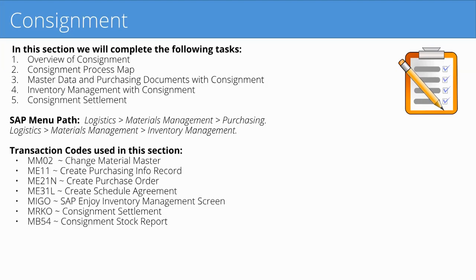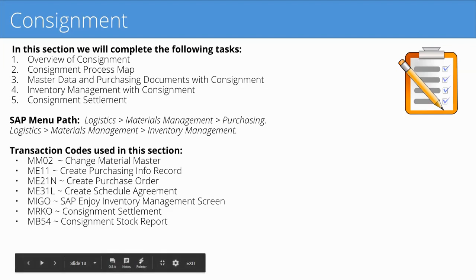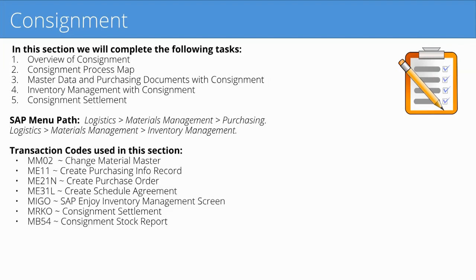We'll be changing the material master settings using MM02, creating a purchasing info record with ME11, and creating purchase orders with ME21N. You can also use schedule agreements — ME31L — as multiple types of purchasing documents are supported. For inventory postings we'll use MIGO, though you could use an inbound delivery for the goods receipt if you wanted. MRKO is the consignment settlement job that creates the invoicing and financial documents. MB54 is a consignment stock report, and MMBE and MB52 also show consignment and unrestricted stocks.